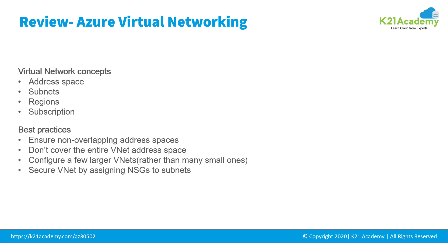You can secure resources within subnets using network security groups. VNets are scoped to a single region or location; however, multiple virtual networks from different regions can be connected using global VNet peering. VNets are also scoped to a subscription, but you can implement multiple virtual networks within each subscription and Azure region. Azure also offers cross-subscription VNet peering, meaning you can peer a VNet from one subscription to another.